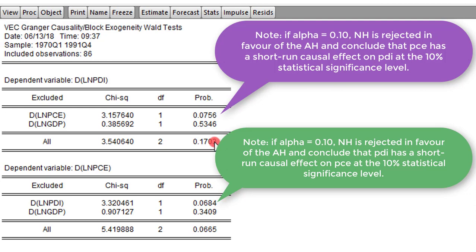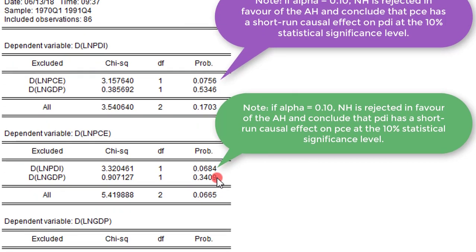Let's look at the PCE equation. We reach the same conclusion as we did for the PDI equation. The chi-square statistic p-value is above 0.05, so we cannot reject the null. The same applies for GDP — the p-value of the chi-square statistic is above 0.05. So again, we conclude that there is no causal relationship in the short run.